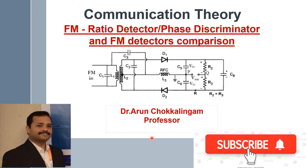Hi everyone, myself Dr. Arun. Today we are going to discuss about the FM ratio detector, which comes under the phase discriminator. This is also called a phase discriminator and is one type of FM detector. Before entering into this topic, we will discuss the main disadvantage of the balanced slope detector and Foster-Seeley discriminator, and why we are moving towards the ratio detector.